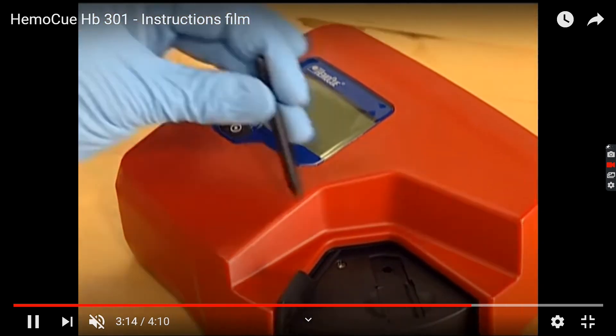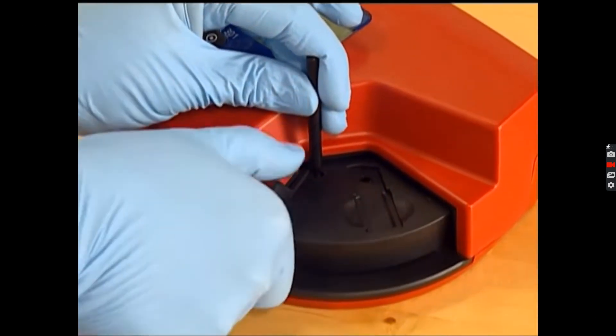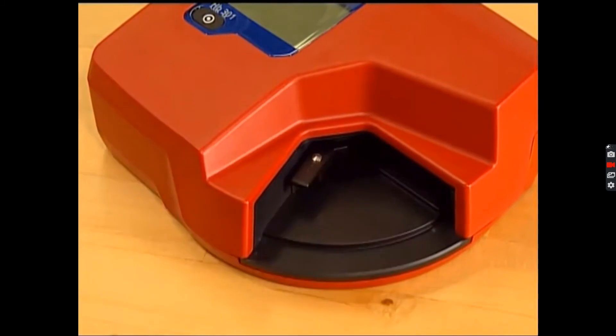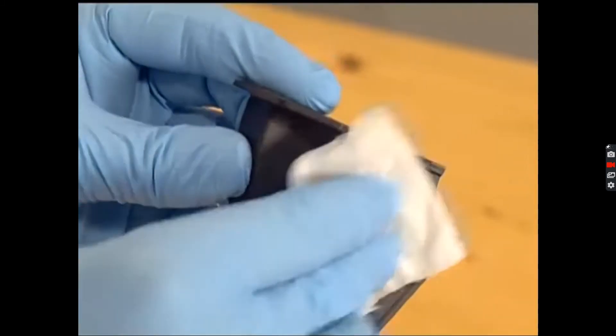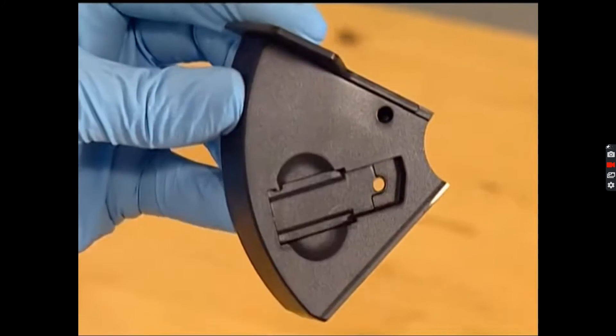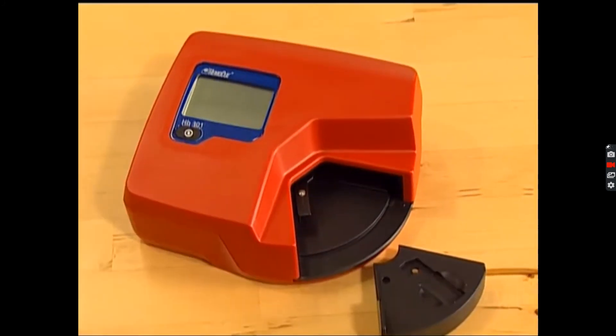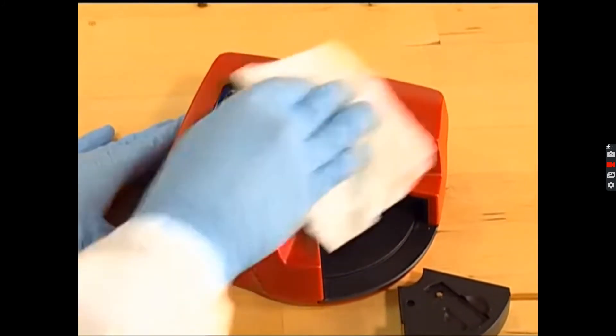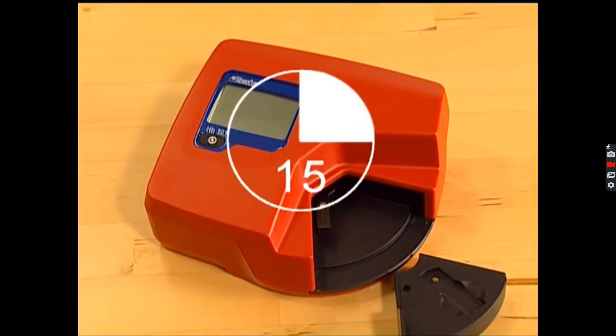Once in a while the machine will require cleaning. Switch off the machine. As you can see here, you can remove the receptacle of the microcuvette and then clean it with a slightly moist paper without using any aggressive detergents. You can also clean the outside if you want to.